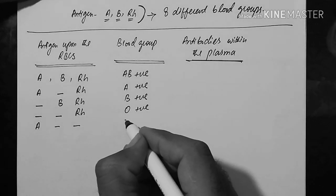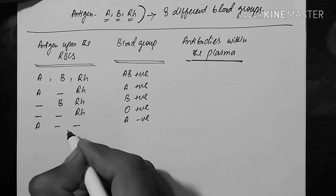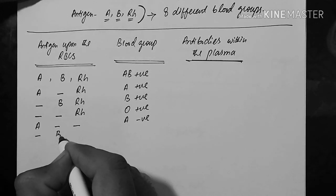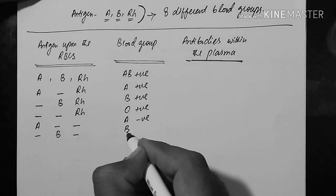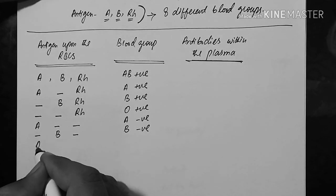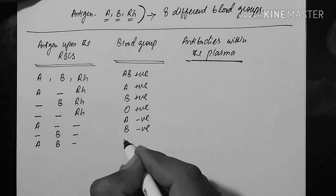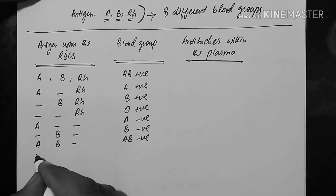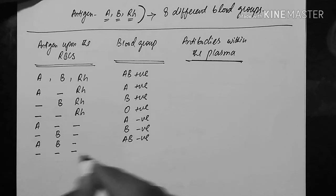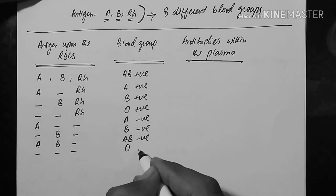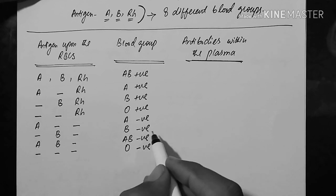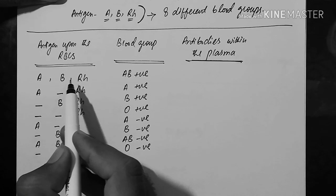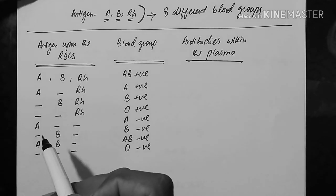For the absence of Rh, we write negative. If there is only A but no B or Rh, the blood group is A negative. If there is only B, the blood group is B negative. A person with A and B but no Rh has blood group AB negative. If there is no A, B, or Rh, the blood group is O negative.